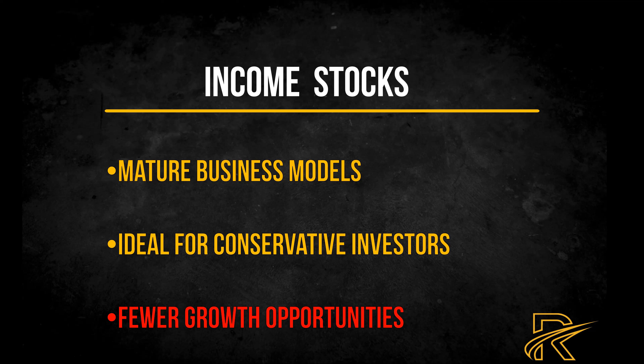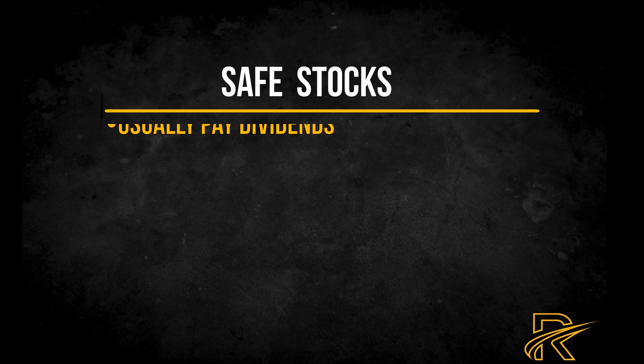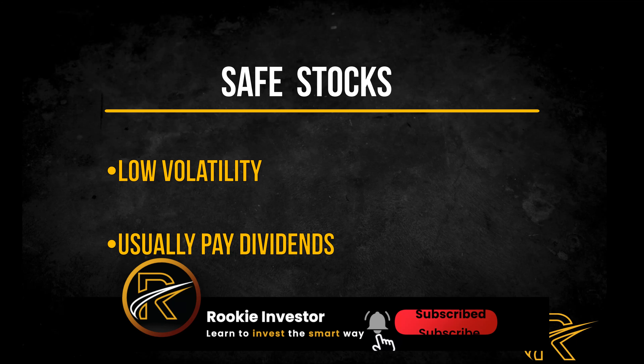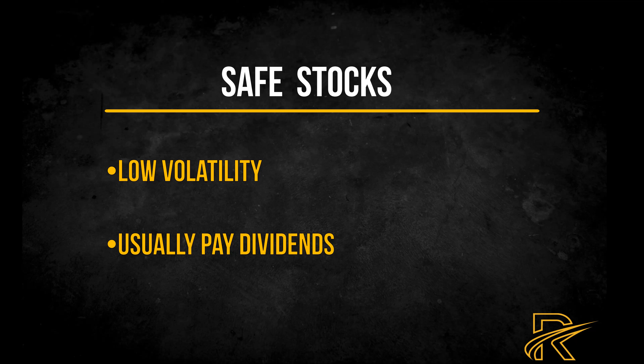Three popular categories are dividend stocks, income stocks, and safe stocks. A dividend stock is a publicly traded company that regularly shares profits with shareholders through dividends. Dividends provide valuable income for investors, making dividend stocks highly popular. Technically, paying even one cent per share qualifies a company as a dividend stock. However, not all stocks pay dividends — non-dividend stocks can still be strong investments if their price rises over time.